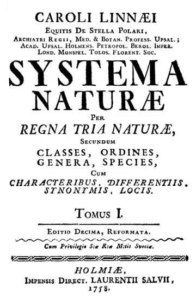In his Imperium Naturae, Linnaeus established three kingdoms: namely Regnum animale, Regnum vegetabile, and Regnum lapidium. This approach — the animal, vegetable, and mineral kingdoms — survives until today in the popular mind, notably in the form of parlour games: 'Is it animal, vegetable, or mineral?'